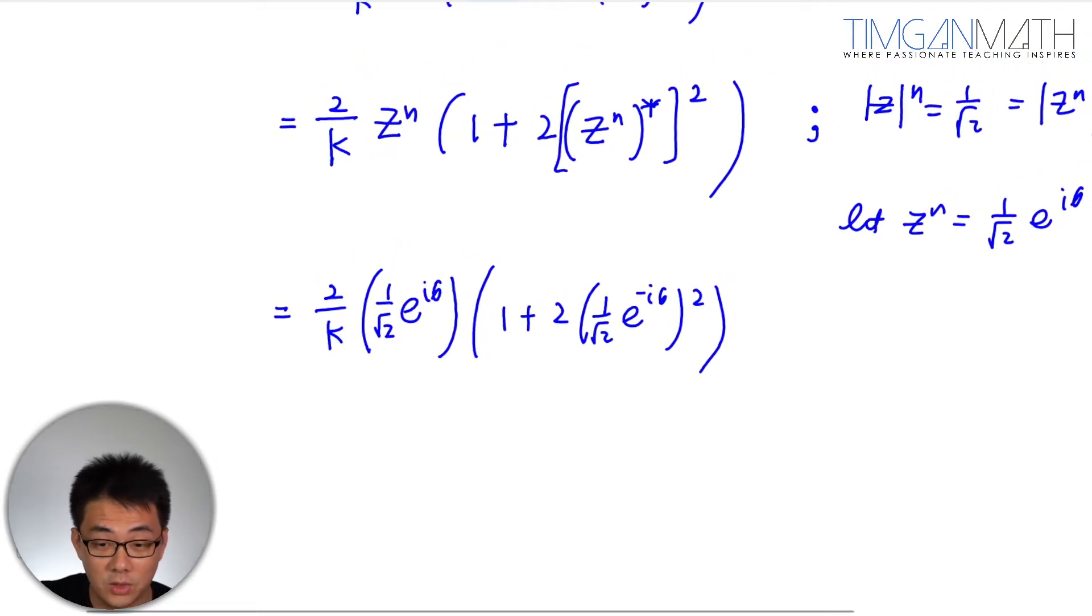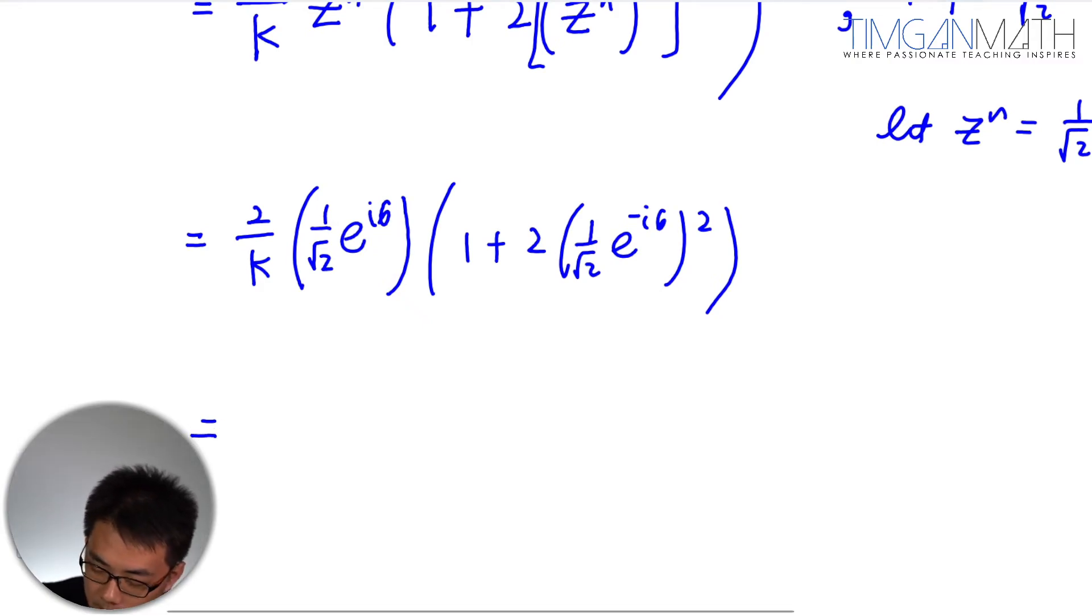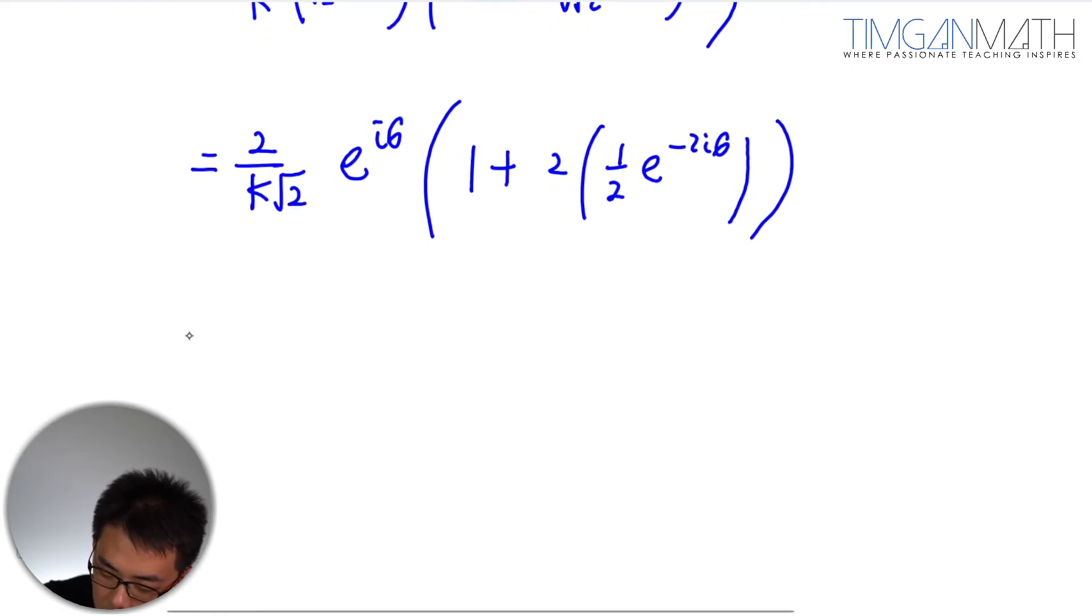Then we try and show that this is actually a real value. So this will be 2 over root 2, I'm going to put the root 2 below e^(iθ), and this will be 1 plus e^(-2iθ). So this will be 2/(k·root 2) times (1 plus e^(-2iθ)).